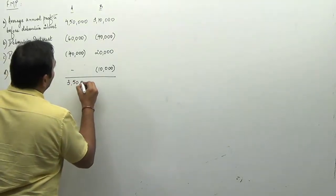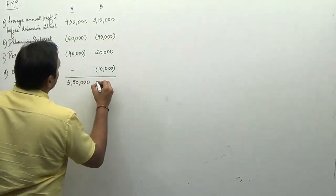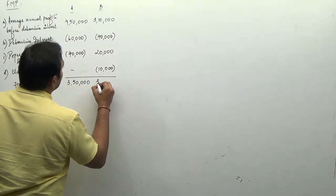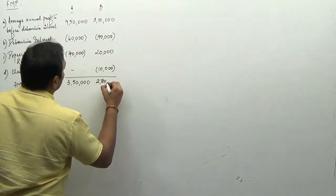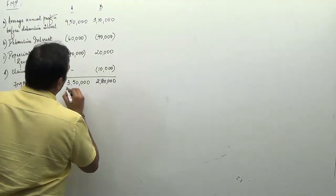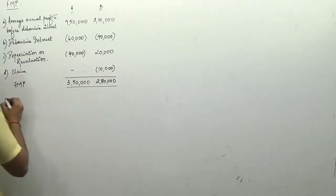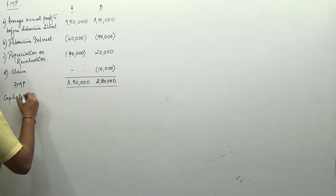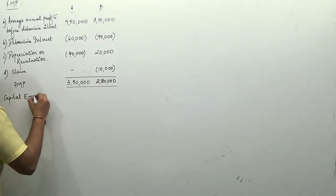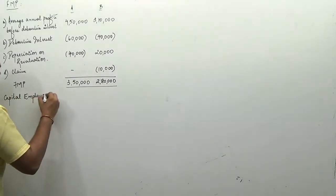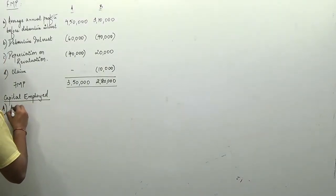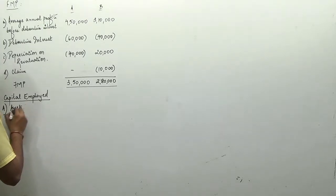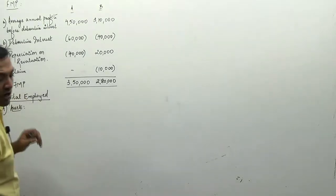FMP is 3,50,000 and 2,80,000. The second determinant is capital employed. You can't calculate average again — base it on closing capital employed only. Continue the columns for assets.